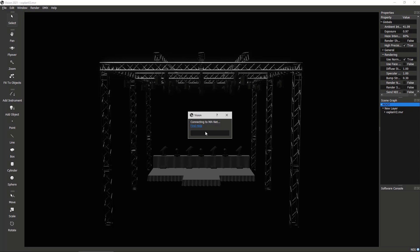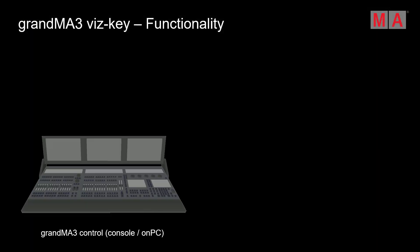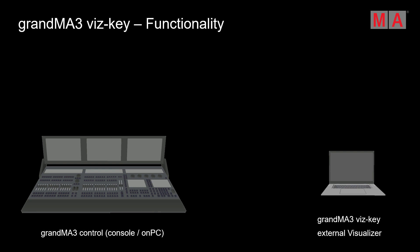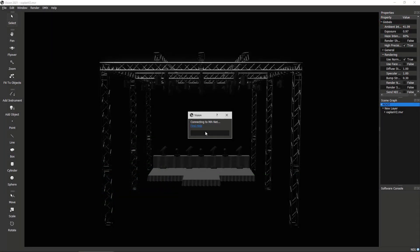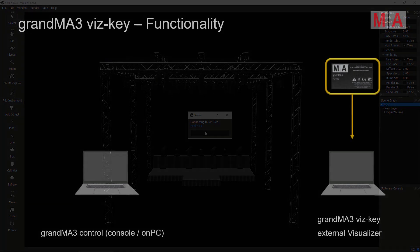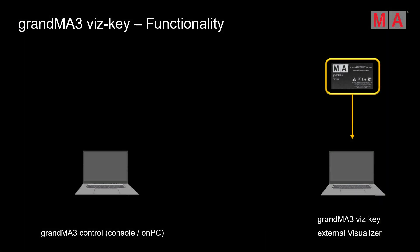When working on a real setup with real consoles and processing units, we could directly use the parameters in our system to control Vectorworks Vision. But in our setup we are working on the on PC software and want to use the external visualizer to pre-program our show file — that's where the Whiskey helps us. We simply connect the Whiskey via USB to the computer with the external visualizer running, and the Whiskey acts as a dongle to unlock all the parameters needed to control external visualizers — up to a maximum of 250,000 parameters in a GrandMA3 lighting control system.